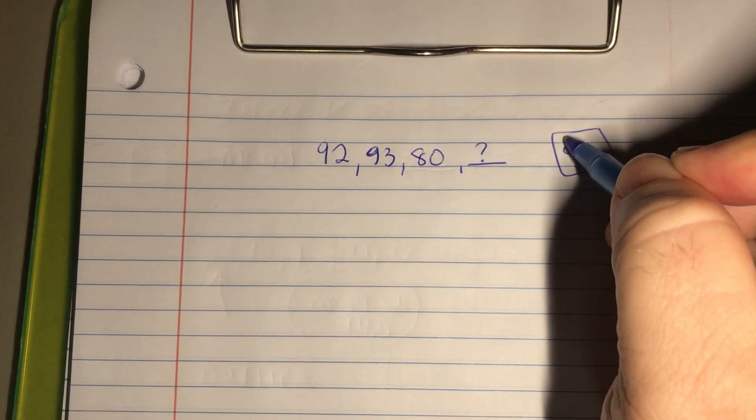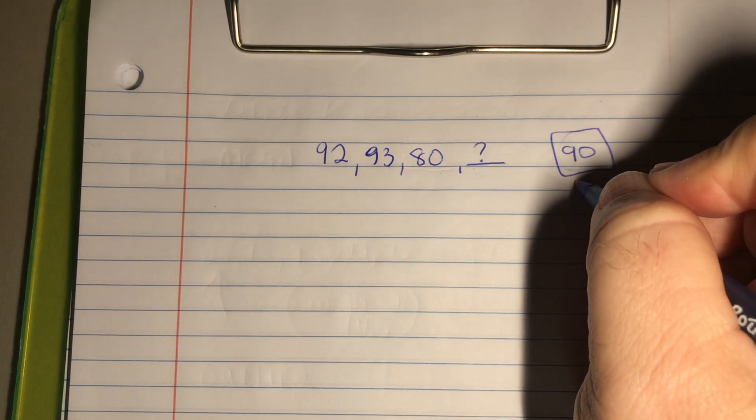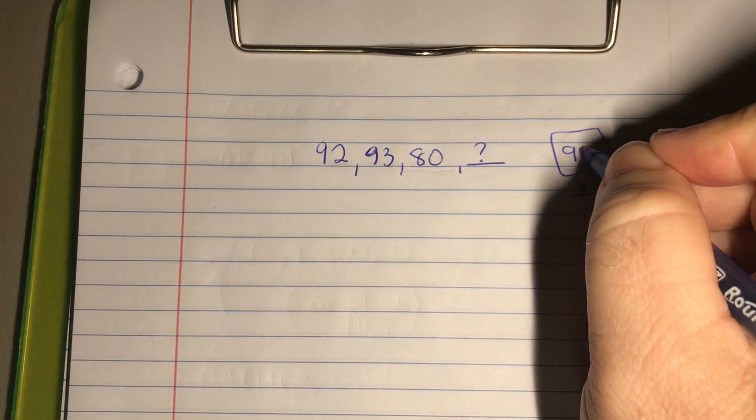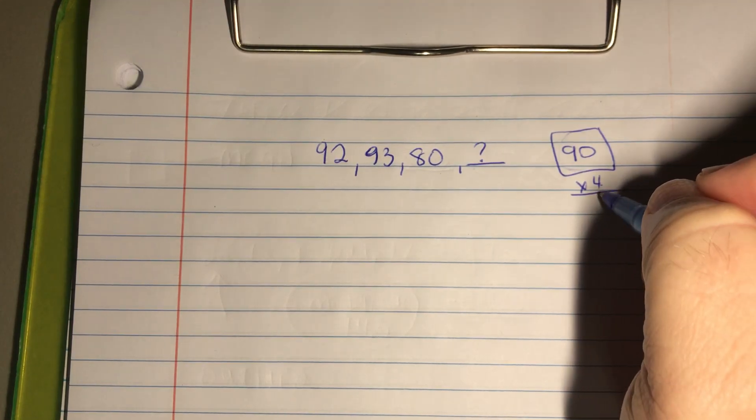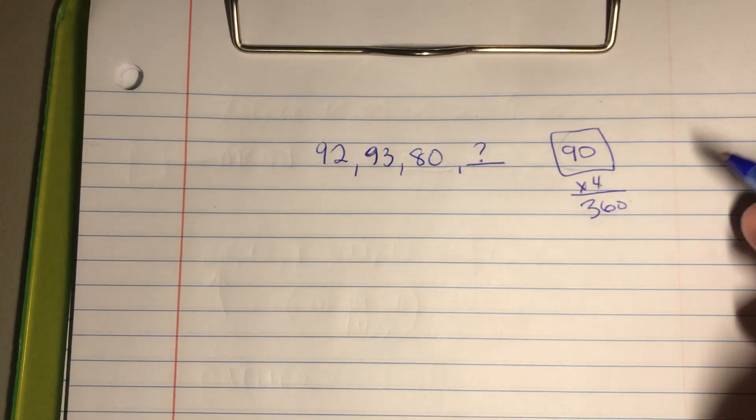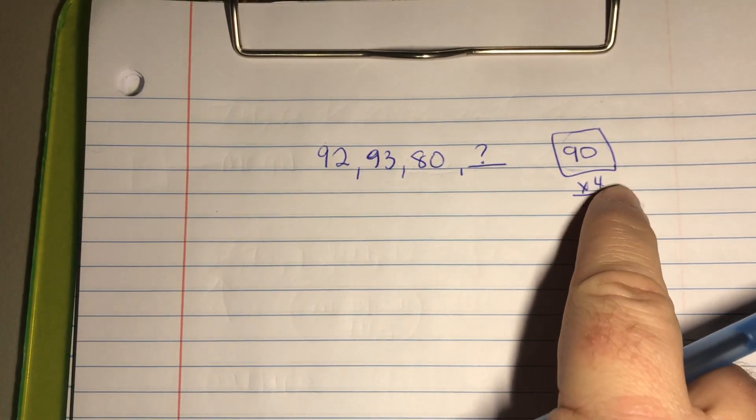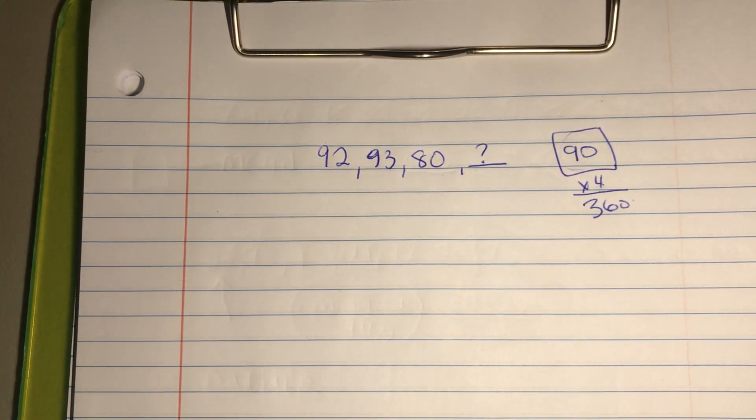or you can simply say okay, there are four tests right. So I know that if I have an average of 90, I need to have the total of what four times 90 would be. So four times 90 is 360. So these four numbers need to add up to this in order for me to divide this by four to go back to 90. Makes sense.